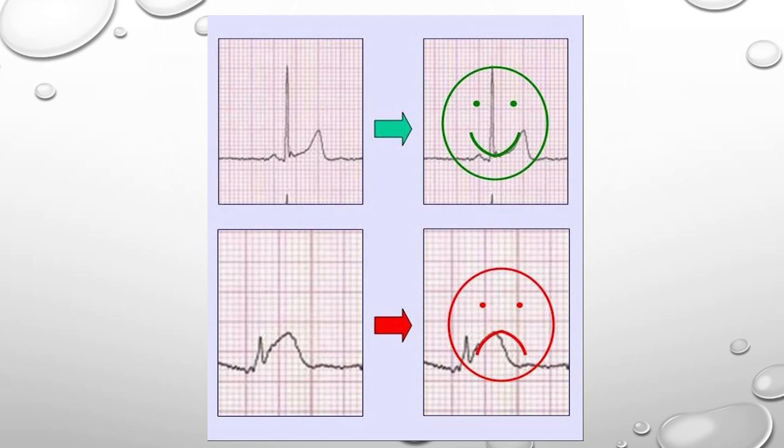That's pericarditis or benign early repol. Next one, same EKG: 60-year-old, crushing substernal chest pain for an hour, diabetic, a smoker with previous PCI — I am activating that as a STEMI. Absolutely. The take-home point is there are things that tip you off to more benign-appearing ST elevation: it's concave-appearing STT wave segments, happy-looking smiley face, you don't see reciprocal change, and it's in a non-worrisome patient.